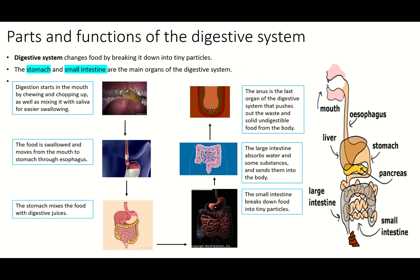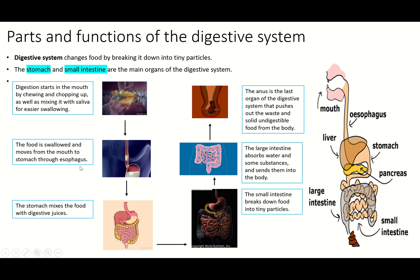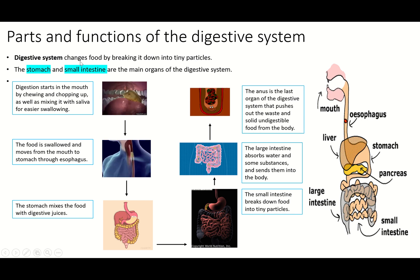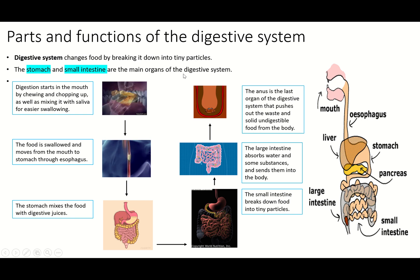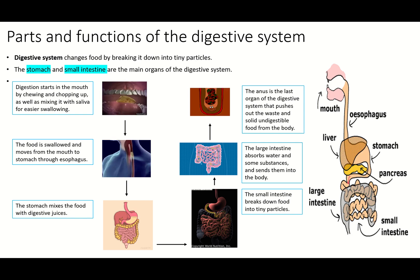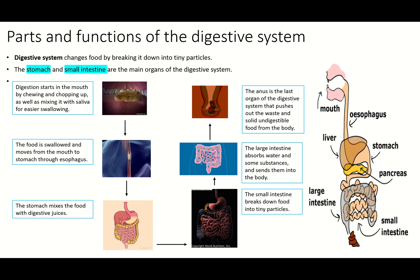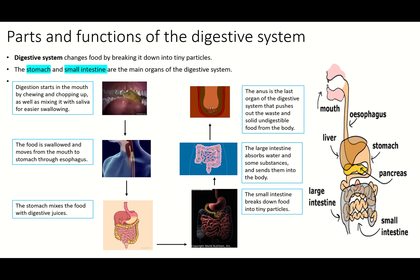The digestive system changes food by breaking it down into tiny particles. It changes the food we eat — like pizza, rice, beans — breaking them down into tiny particles, because our body needs tiny particles. It doesn't need a piece of pizza or rice or beans; it just needs tiny particles.